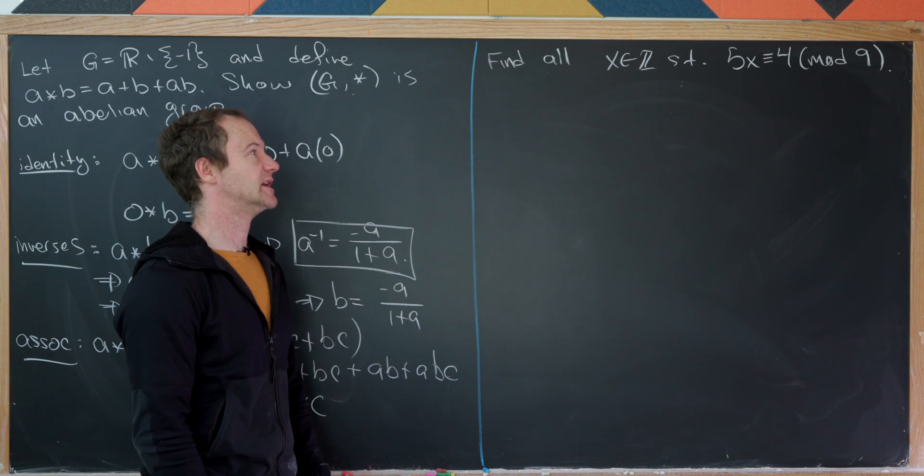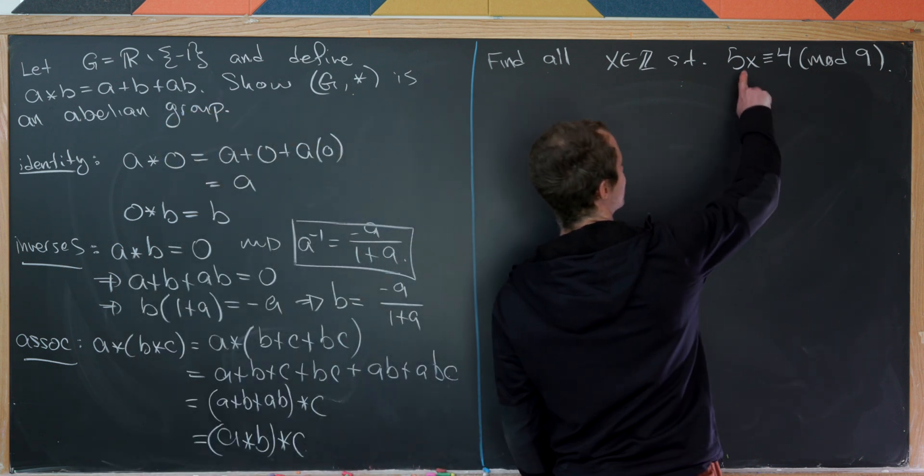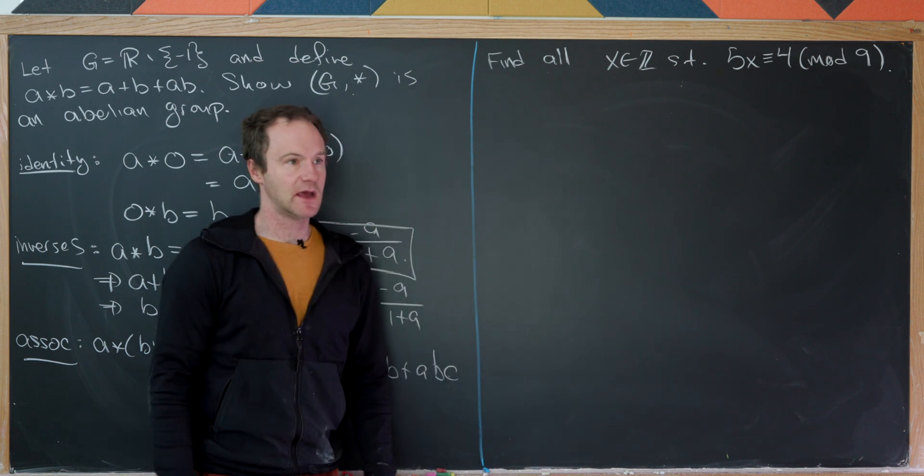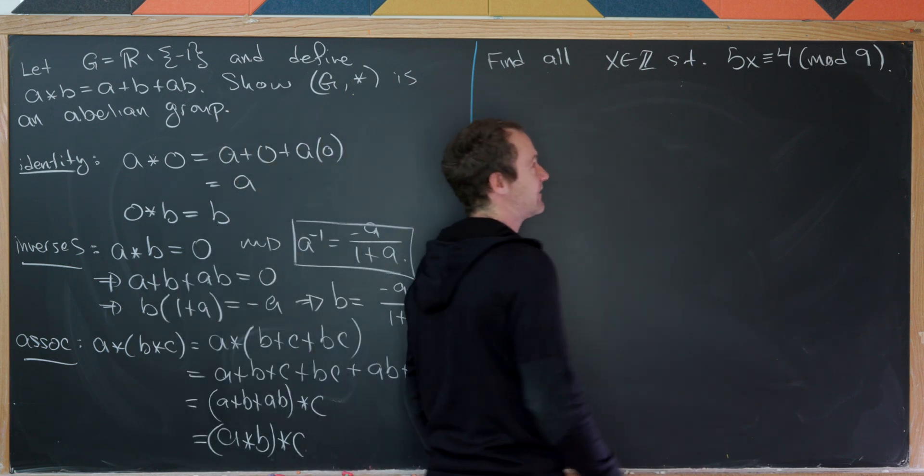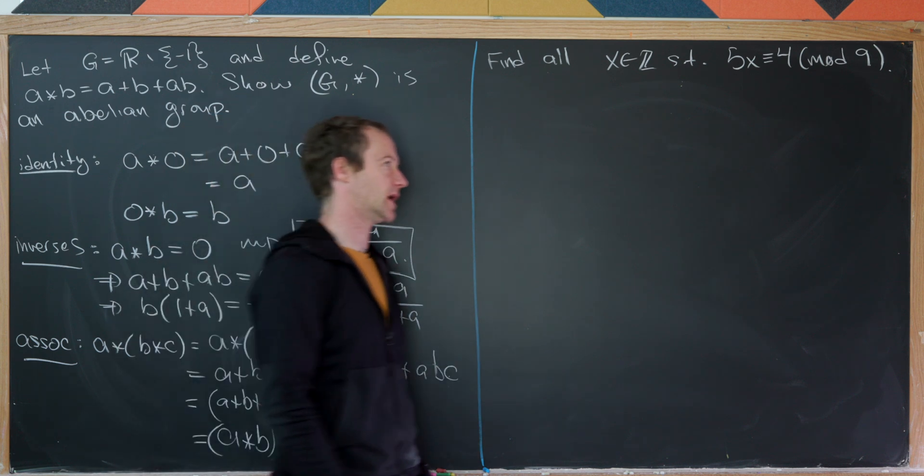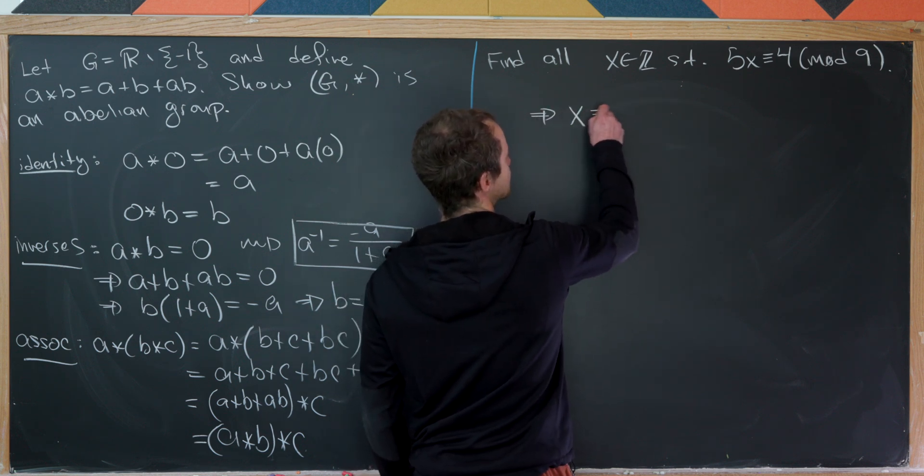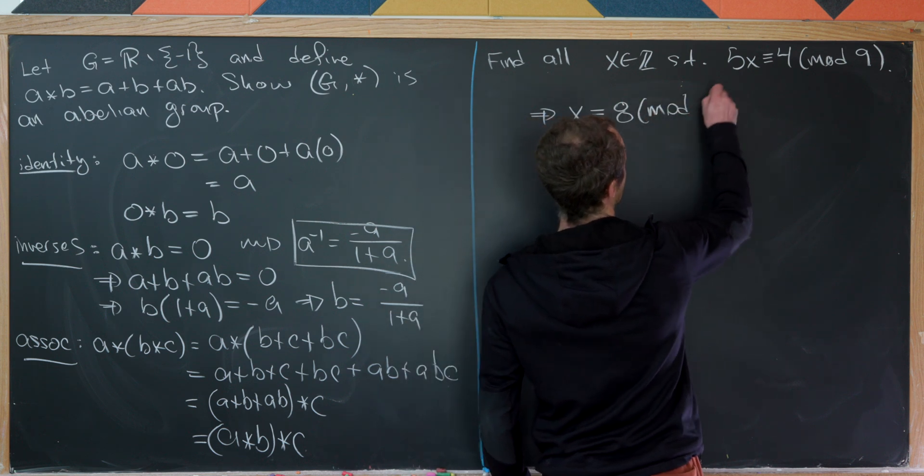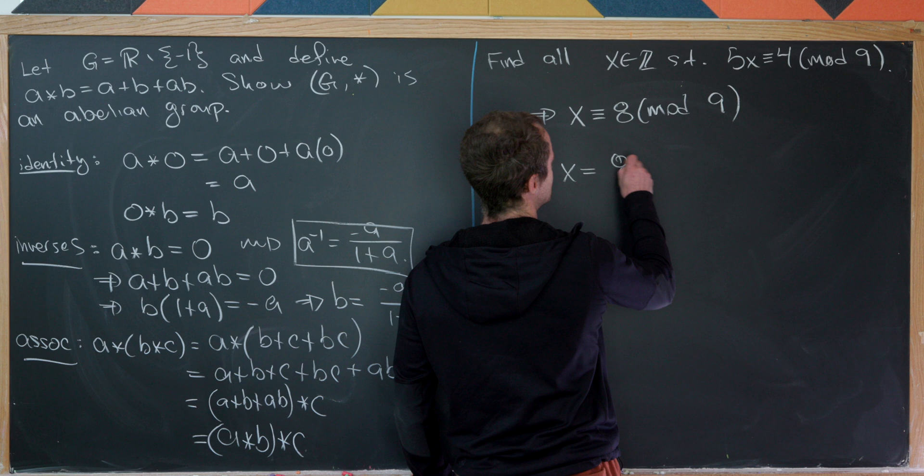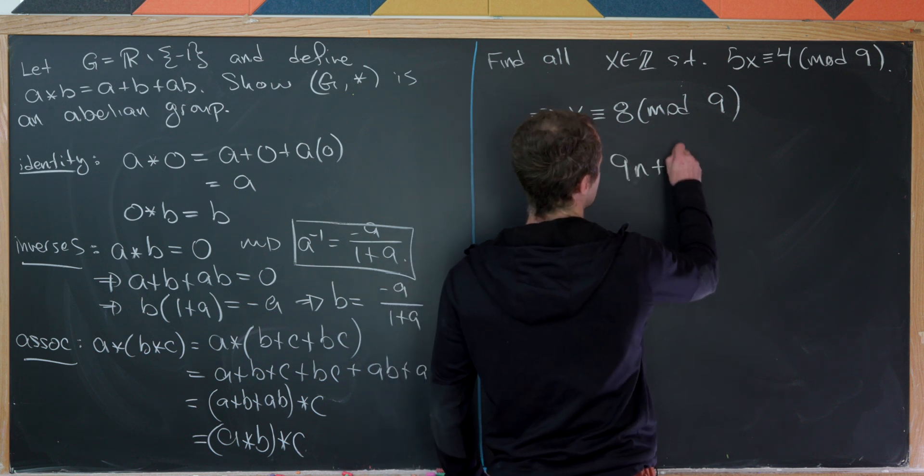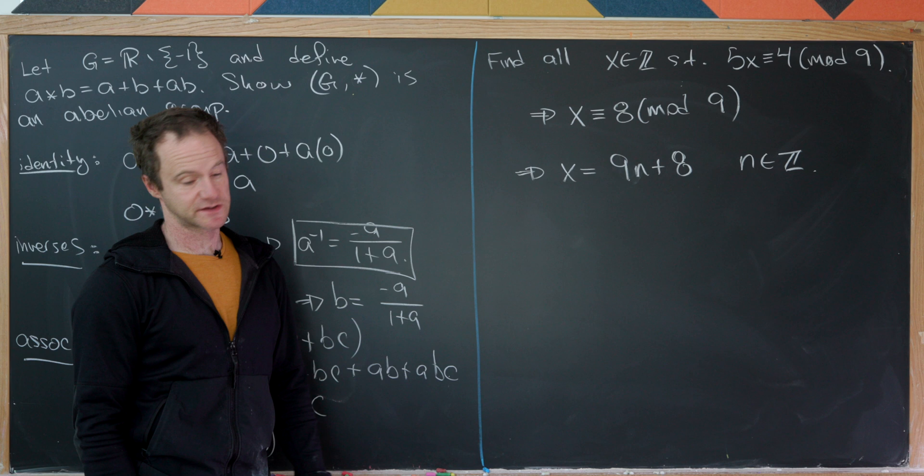It's kind of a number theory problem. Let's find all integers x such that 5x is congruent to 4 mod 9. So we know that 5 has an inverse mod 9 and mod 9, it is unique. It's not unique over the integers, but it is unique mod 9. And in fact, the inverse is 2. That's because 5 times 2 is 10, which is 1 mod 9. So we could multiply both sides of this congruence by 2, and that'll give us x is congruent to 8 mod 9. But that's not all integers. How to write it as all integers would be as follows. So we have x is equal to 9n plus 8, as n runs over all integers. And that would be a way of describing all solutions here.